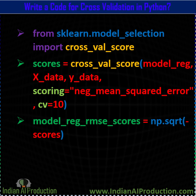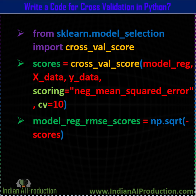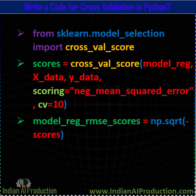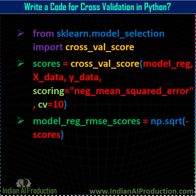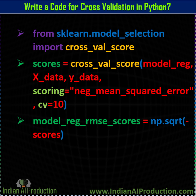After that, you will get a score value — it's a negative mean squared error value. But we need root mean squared error values, so we will use np.sqrt from numpy and pass minus the score data. Then we will get the root mean squared error value of your regression machine learning model.